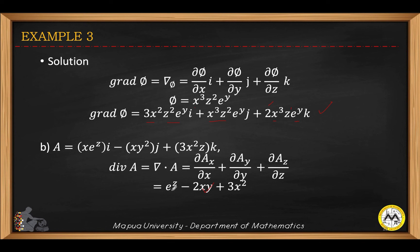The partial derivative of x·e^z with respect to x — just copy e^z, derivative of x is 1. Then the derivative of negative x·y squared with respect to y — negative x is constant, derivative of y squared is 2y, so we get negative 2xy. Then 3x squared is constant, derivative of z is 1. Note that this is a scalar product, so you get a scalar function.